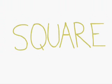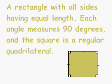A square is a rectangle with all sides having equal length. Each angle measures 90 degrees, a right angle, and the square is a regular quadrilateral.